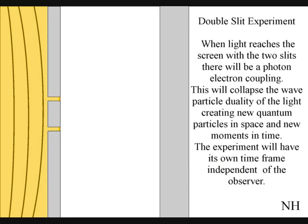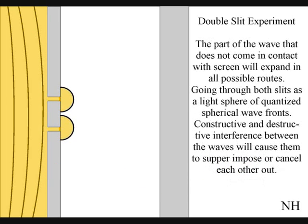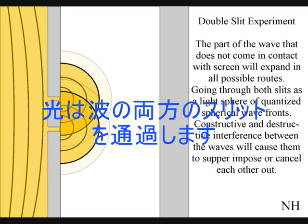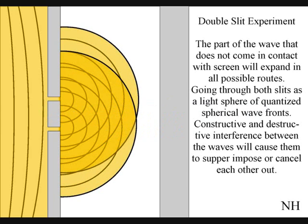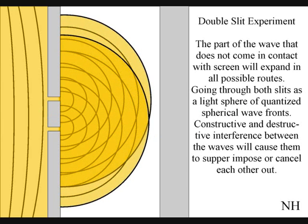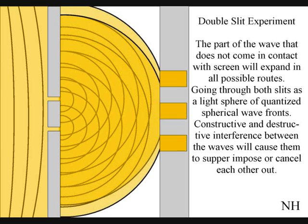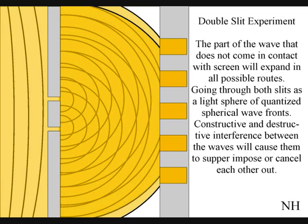The part of the wave that does not come in contact with the screen will expand in all possible routes, going through both slits as two wave-fronts. Interference between the waves will cause them to superimpose or cancel each other out. When these waves come in contact with the screen, they will collapse, creating quantum particles in space and time in the shape of an interference pattern.